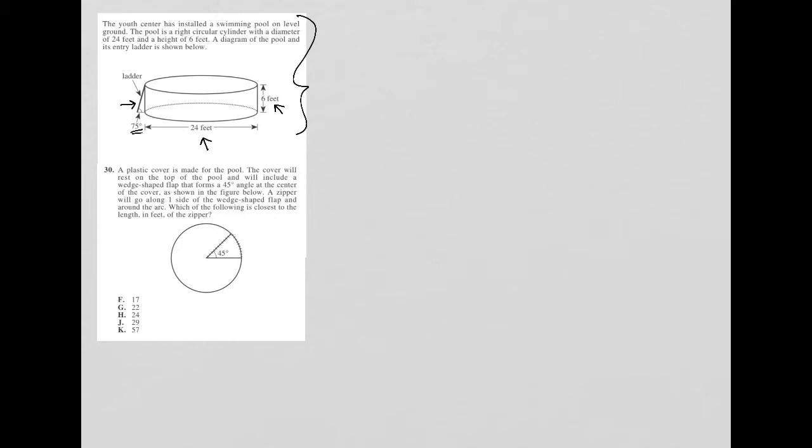Question number 30 says: a plastic cover is made for the pool. The cover will rest on the top of the pool and will include a wedge-shaped flap that forms a 45-degree angle at the center of the cover as shown in the figure below.